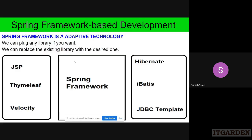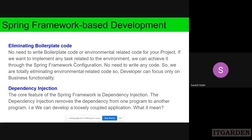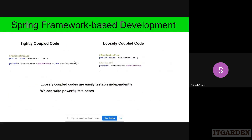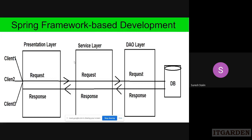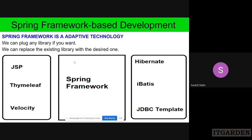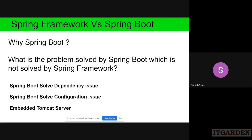Spring Framework provides these features: eliminating boilerplate code, dependency injection, loosely coupled code, independent layer testing, and plug-and-play library management. So why does everyone use Spring Boot today? Spring Framework has some drawbacks. Spring Boot is developed on top of Spring Framework — it's not a different technology, not a competitor. Spring Boot solves dependency issues, configuration issues, and provides an embedded Tomcat server.